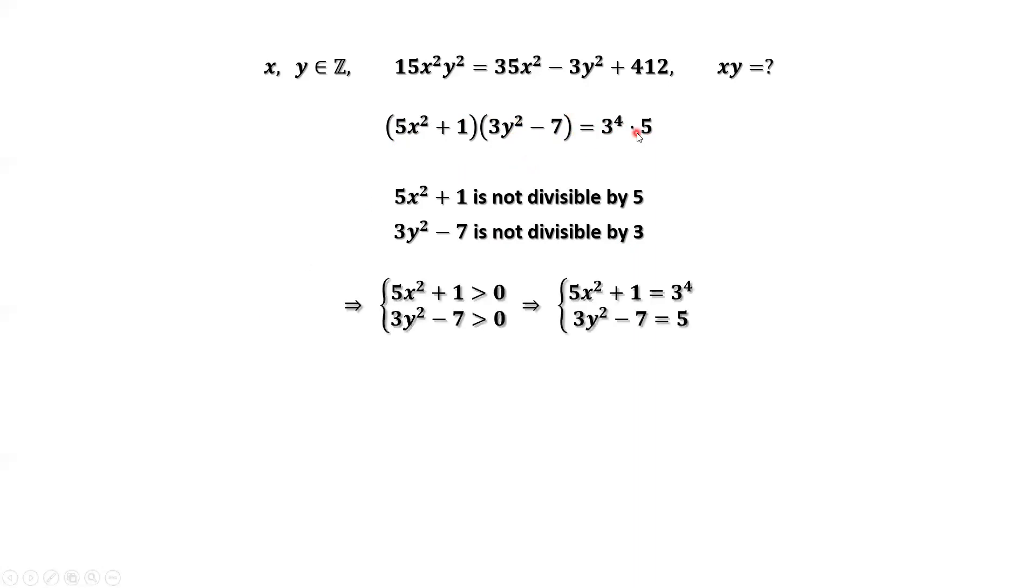The right-hand side is positive. The first factor of the left-hand side is positive. Therefore, the second factor of the left-hand side is positive too. Therefore, we have 5x² + 1 = 3⁴ and 3y² - 7 = 5.